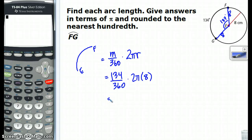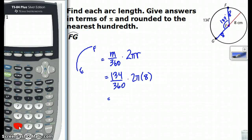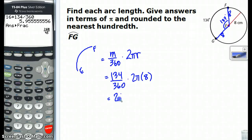And let's just go ahead and multiply this out. So, we've got 8 times 2 is 16, times 134, divided by 360. Probably going to be some decimal, yeah. But let's make it a pretty fraction by pressing math 1, enter. And it's the pretty fraction, which is 268, all over 45 pi. And they want an answer in terms of pi, and an answer rounded to the nearest hundredth.